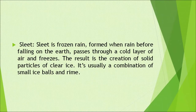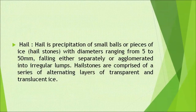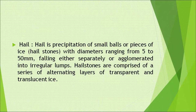Sleet is frozen rain formed when rain, before falling to the earth, passes through a cold layer of air and freezes, resulting in the creation of solid particles of clear ice. It is usually a combination of small ice balls and rime. Hail is the precipitation of small balls or pieces of ice with diameter ranging from 5 to 50 millimetres, falling either separately or agglomerated into irregular lumps. Hailstones are comprised of a series of alternating layers of transparent and translucent ice.